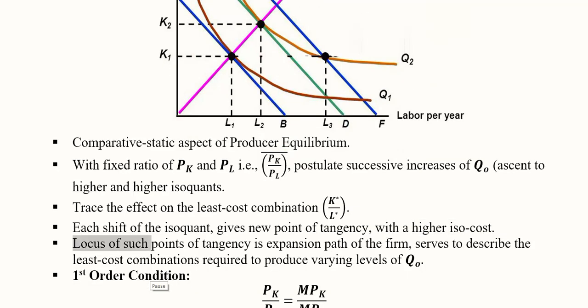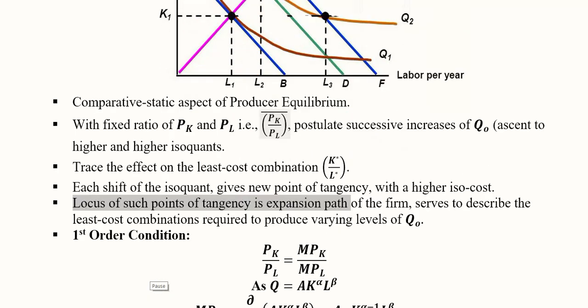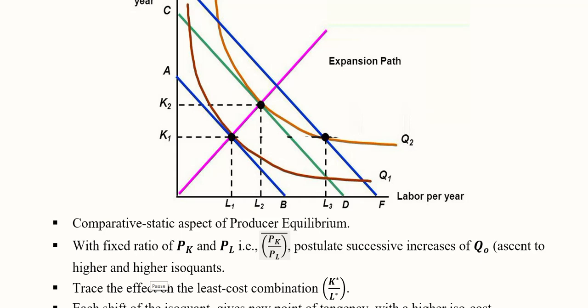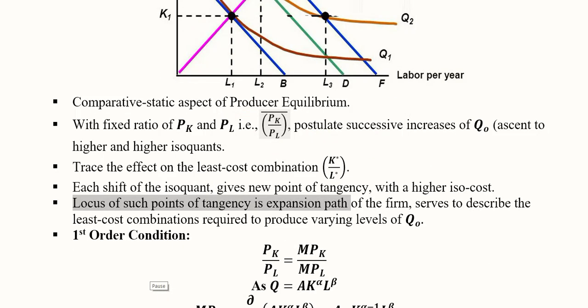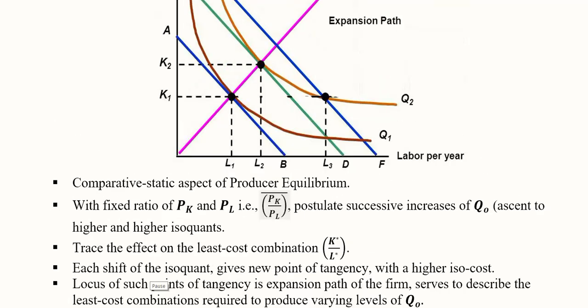And the locus of such points of tangency is the expansion path. This is the locus or the root of these points starting from the origin. So we get the expansion path. Now we can do this by the use of first order condition. We remember that the first order condition is equal to this, and that is the point of tangency of the isocost line and the isoquant.